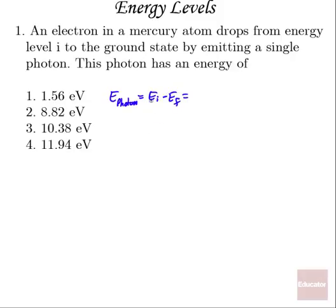So I look up on my energy level diagram for mercury and find that the energy level for i is going to be about negative 1.56 eV, and that's minus the ground state, which is going to be negative 10.38 eV. Therefore, the energy of that photon, negative 1.56 plus 10.38, comes out to be about 8.82 electron volts. Answer number two.